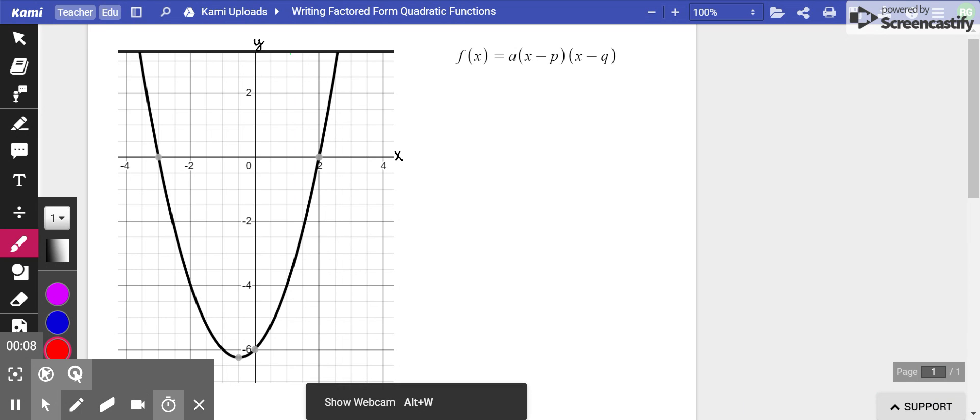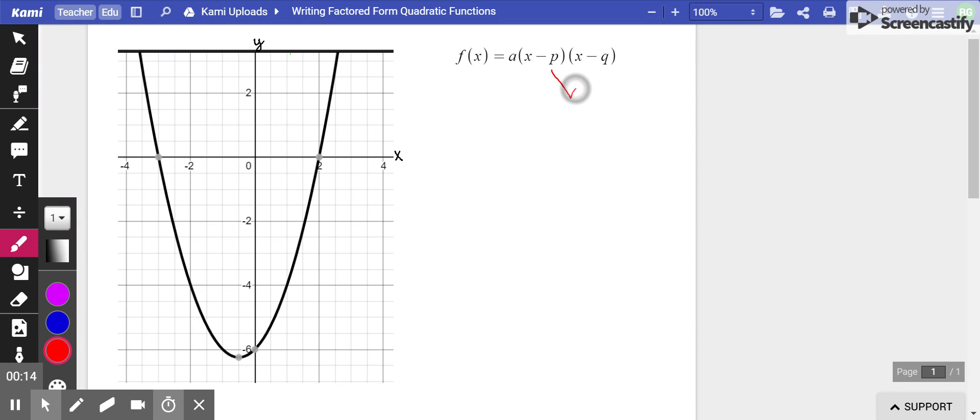So here you see we have a nice quadratic function. Here is the factored form of a quadratic. P and Q are your zeros or x-intercepts.